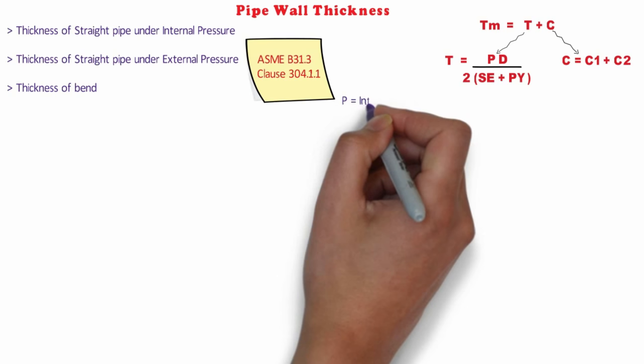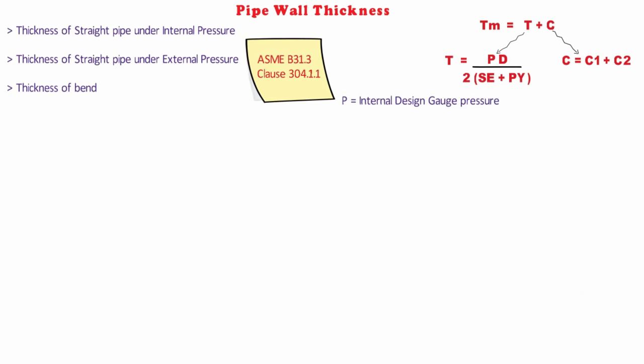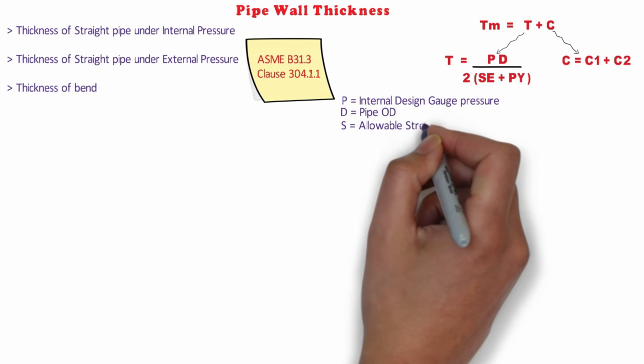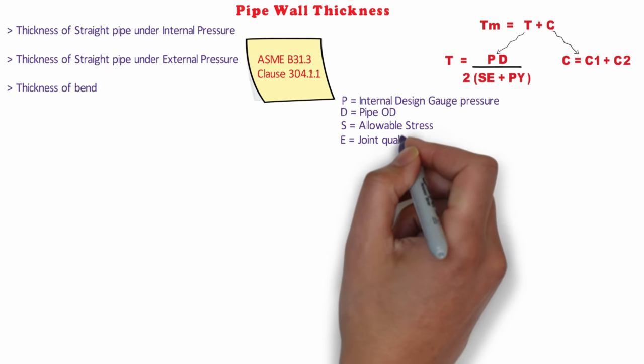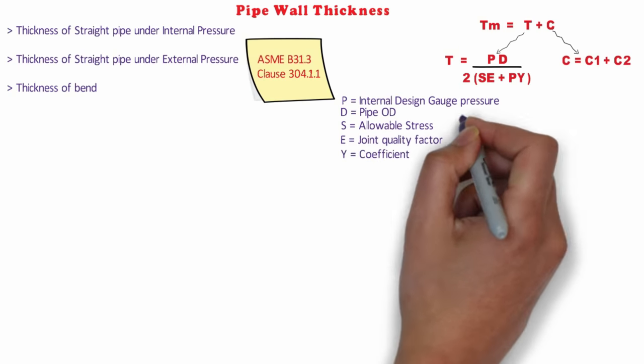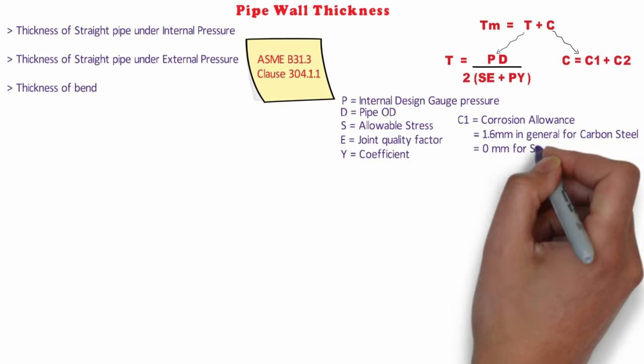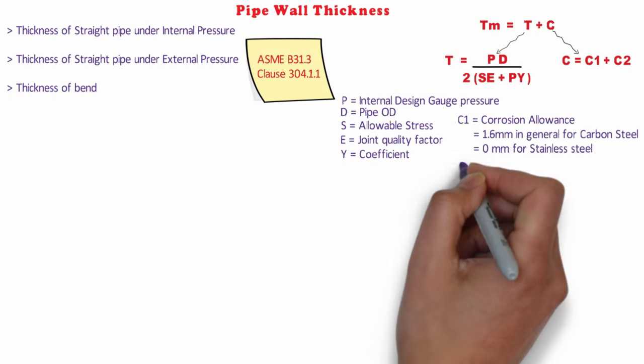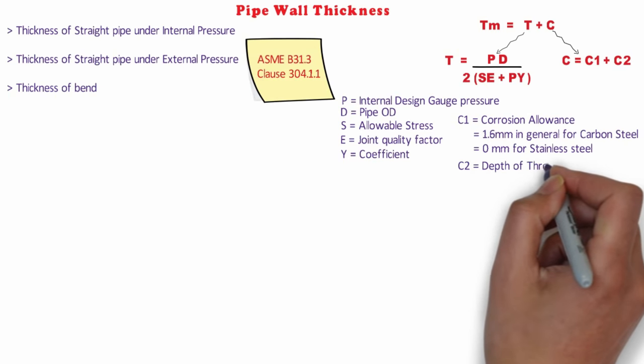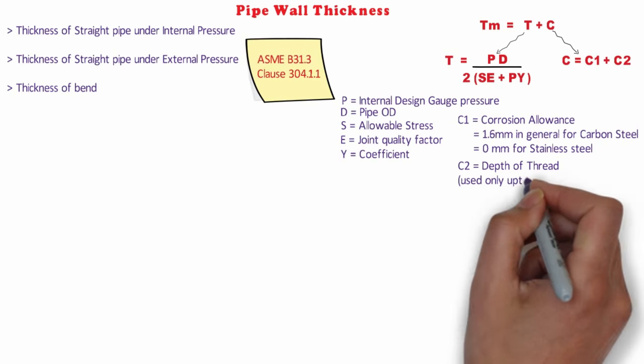Where P is internal design gauge pressure, D is outside pipe diameter, S is allowable stress, E is joint quality factor, Y is coefficient, c1 is corrosion allowance which equals 1.6 mm in general for carbon steel and 0 mm for stainless steel, c2 is depth of thread. The parameter c2 is used only up to 1.5 inches of nominal pipe.